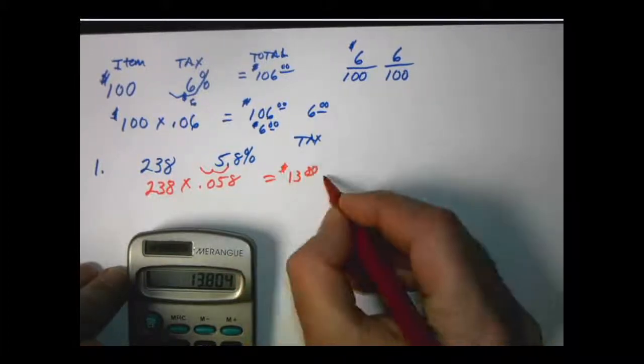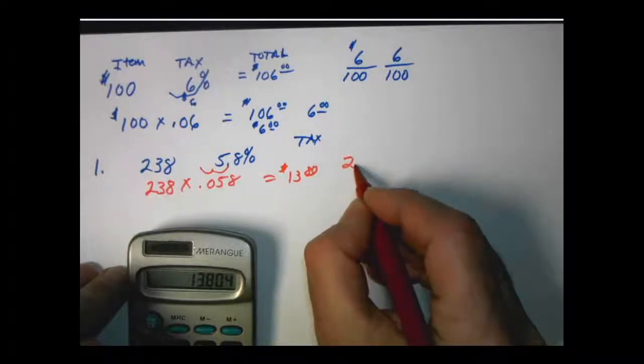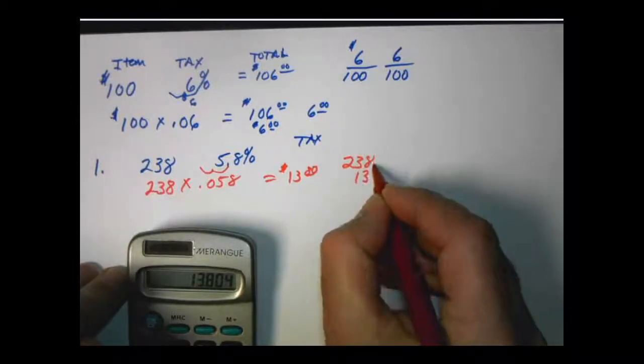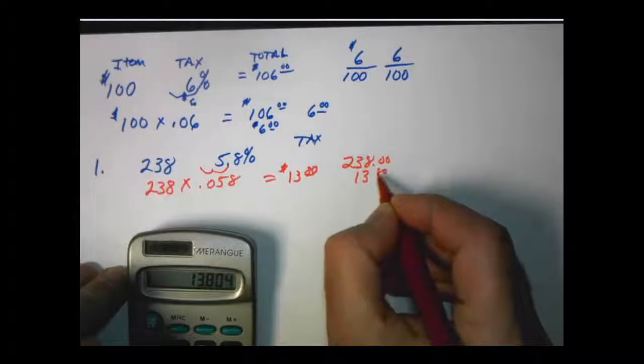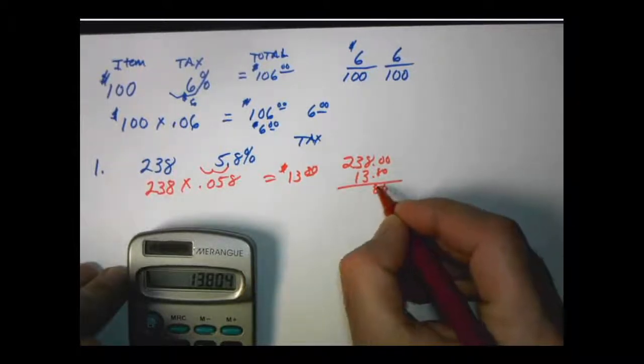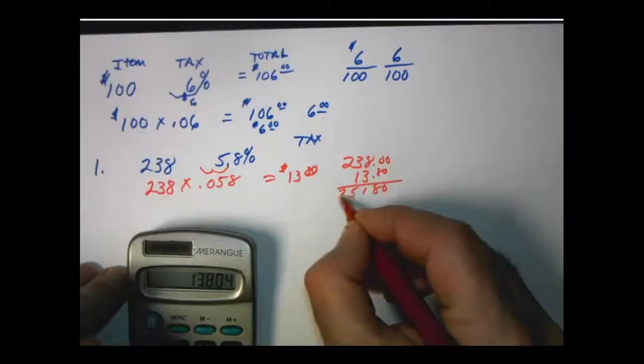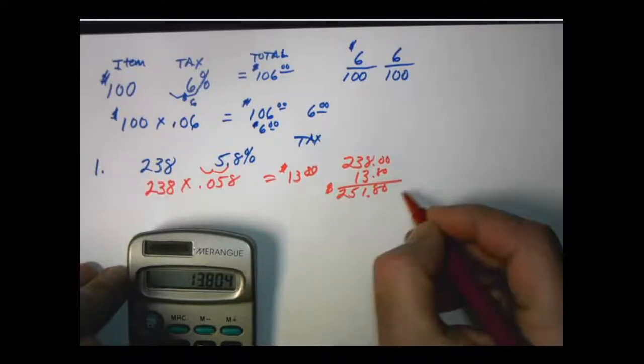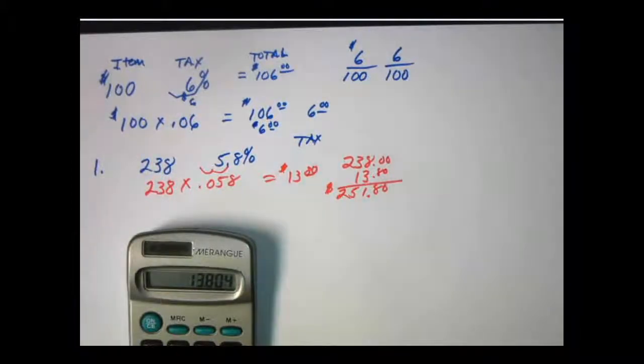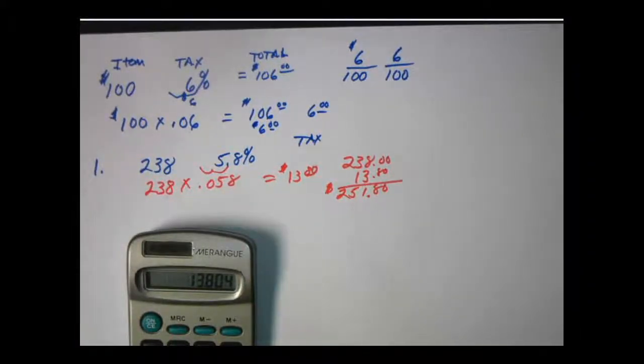We have to add that then to our original purchase price. We'll just then add that up for our total cost. That's what you're going to have to write the check for. Let's do another one.